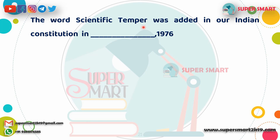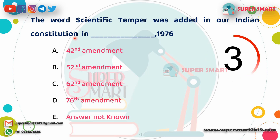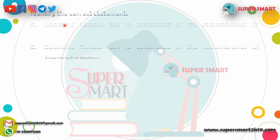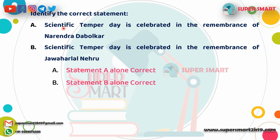Next question: The word 'scientific temper' was added to the Indian constitution through which amendment? What amendment was made, and how many amendments were involved?